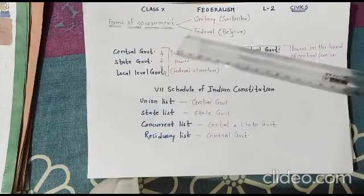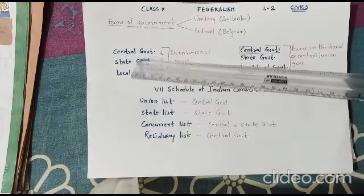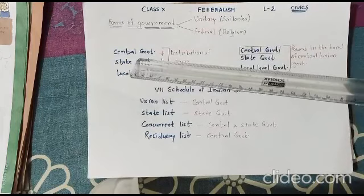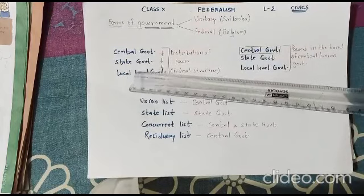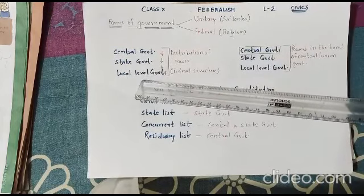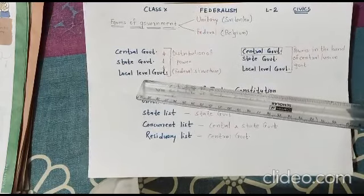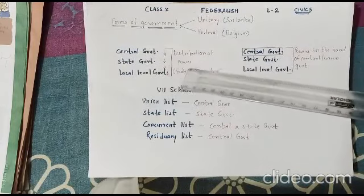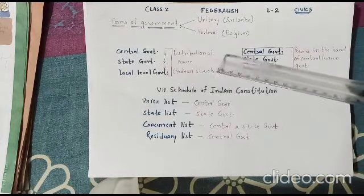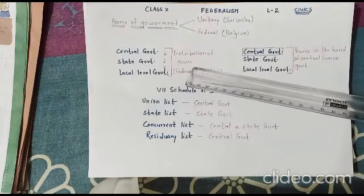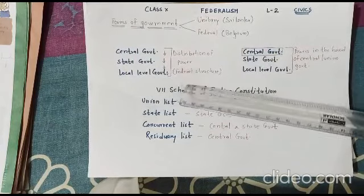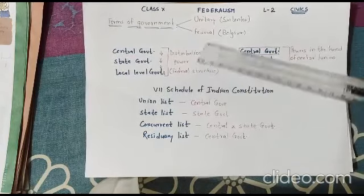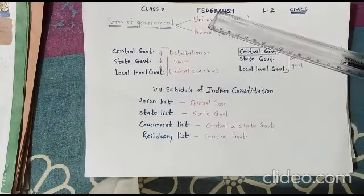We will now study two forms of government: unitary and federal. If there are three levels of government — central government, state government, and local level government — and the structure believes in distribution of power, then that is called a federal structure, which is termed as federalism.